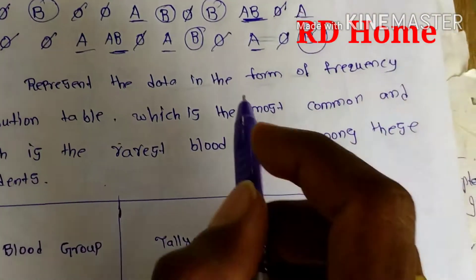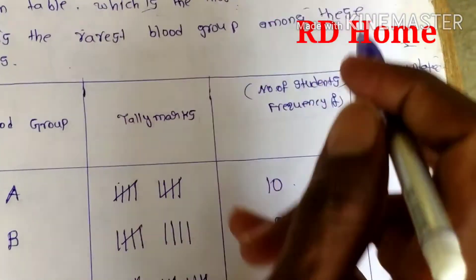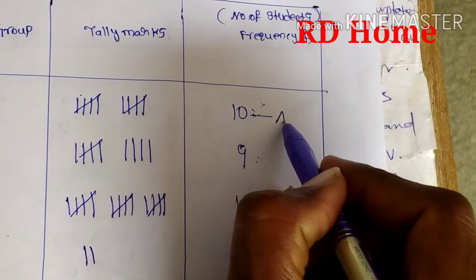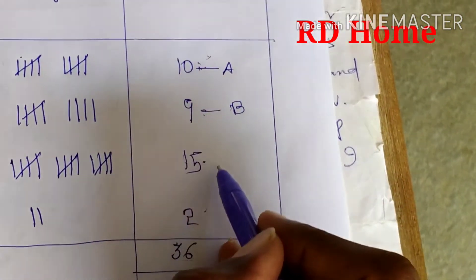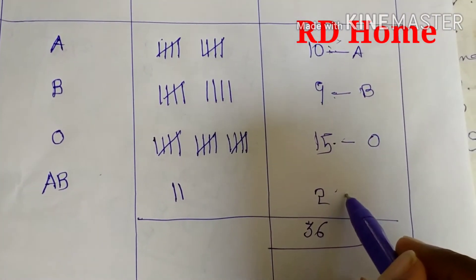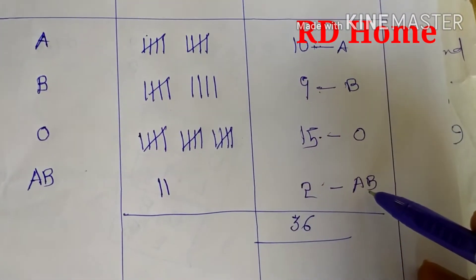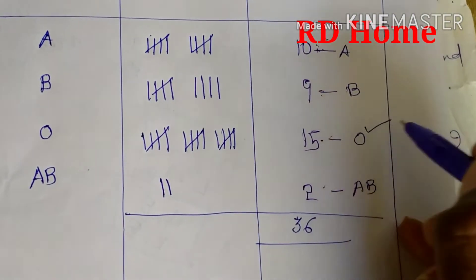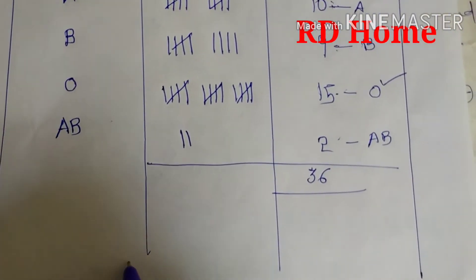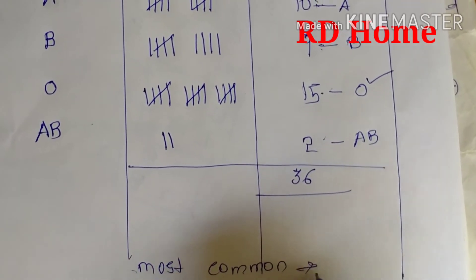Now you can see the next part of the question. Which is the most common blood group? In that class, 10 students have blood group A, 9 students have blood group B, 15 students have blood group O, and 2 students have blood group AB. The highest frequency is 15, so O is the most common blood group. The answer: most common blood group is O.